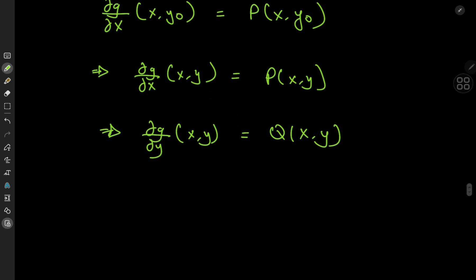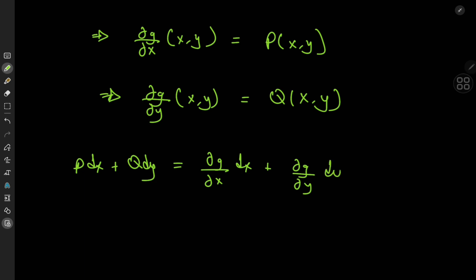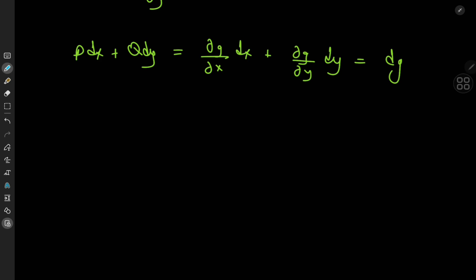This is extremely cool, because it means the differential form p dx + q dy equals (∂g/∂x) dx + (∂g/∂y) dy, which is the differential of g. In integral form, we have the integral over gamma of p dx + q dy equal to the integral over gamma of dg.